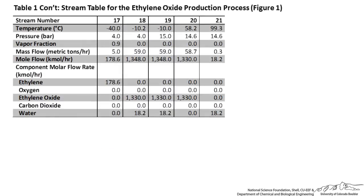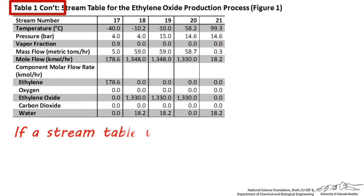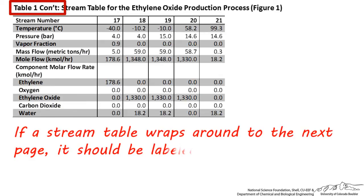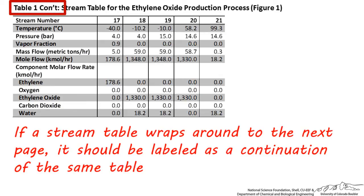If the table wraps around to the next page, however, you should include a table label which denotes this as Table 1 Continued. This is not a different or separate table, it's just a continuation of the previous one, which is why it's not labeled Table 2.